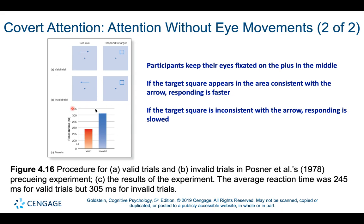On an invalid trial, your covert attention wanders to the wrong side. When the square appears on the opposite side of the screen, covert attention has to shift over there. That shift takes time — an added layer of processing difficulty — reflected in about a 60 millisecond difference in responding between valid and invalid trials.